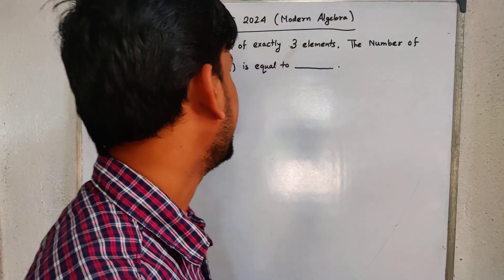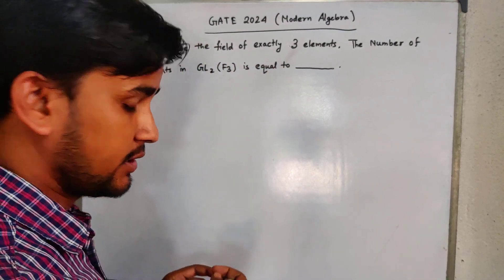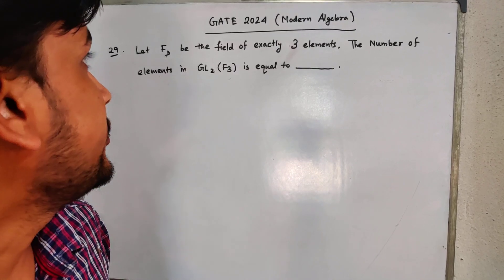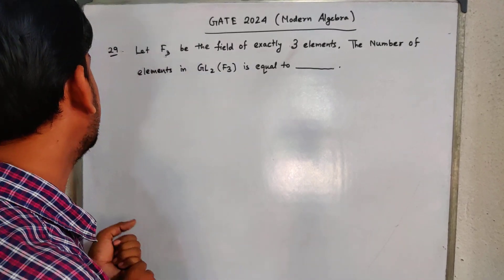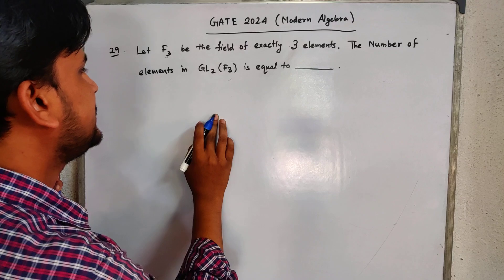Hello everyone, this is Chandan and you are watching The Learning Field. In this video we are going to solve the questions of GATE 2024, and this is a modern algebra question, question number 29. This is a very easy problem based on the formula of modern algebra.